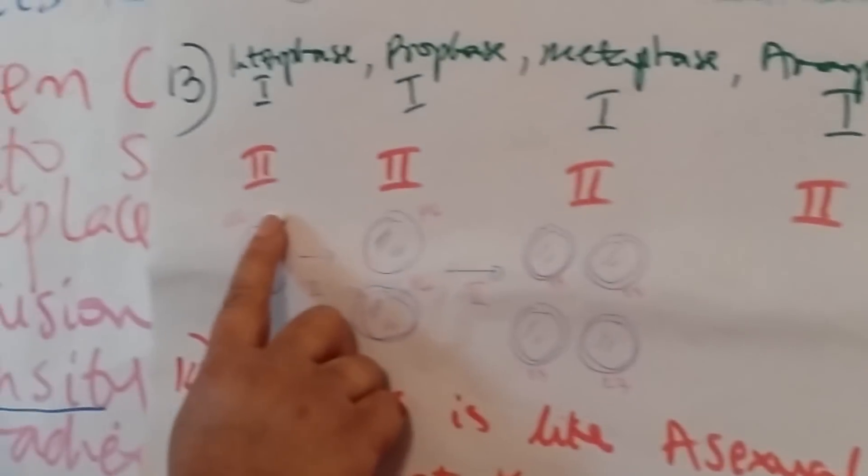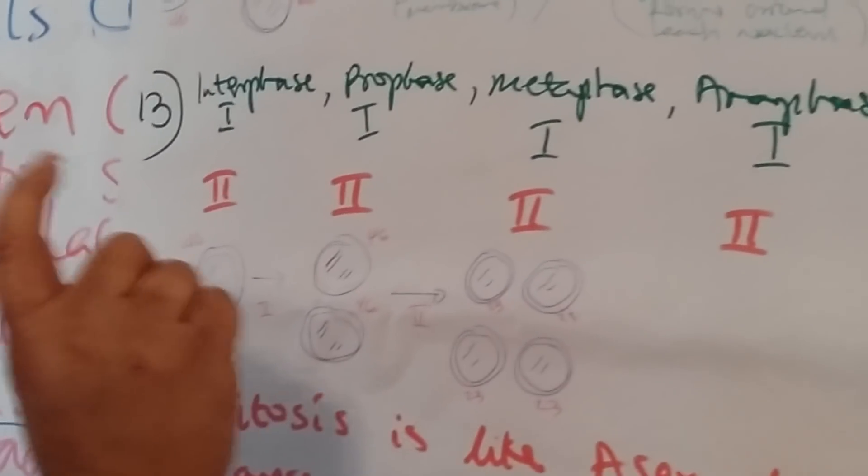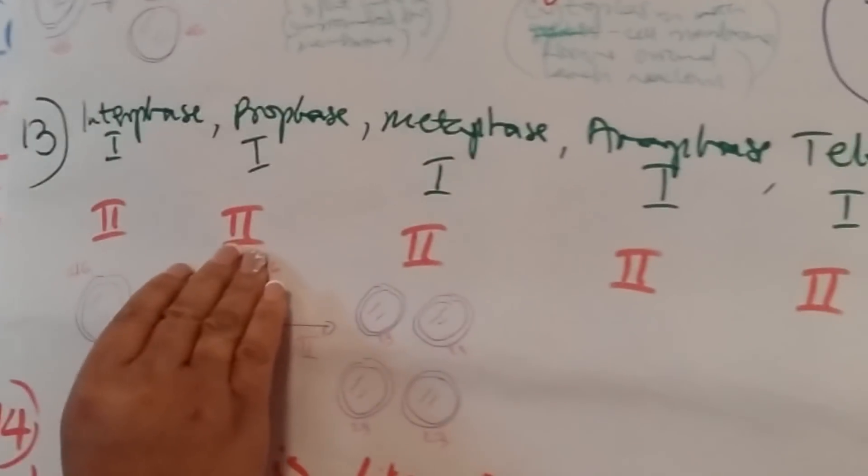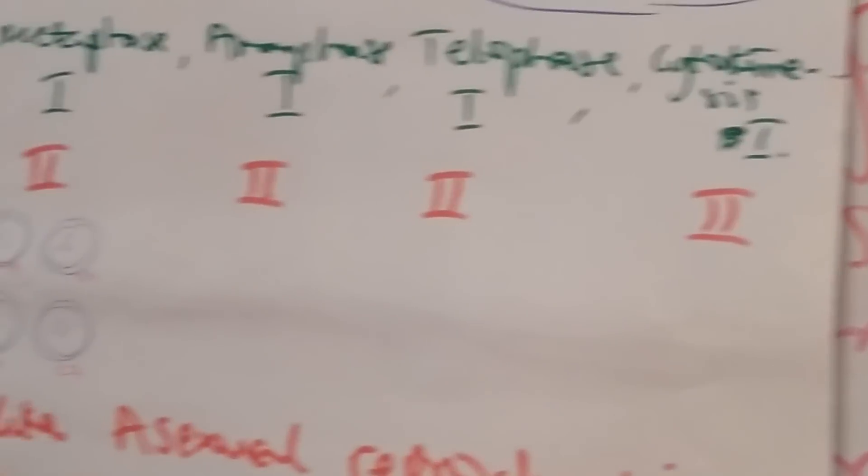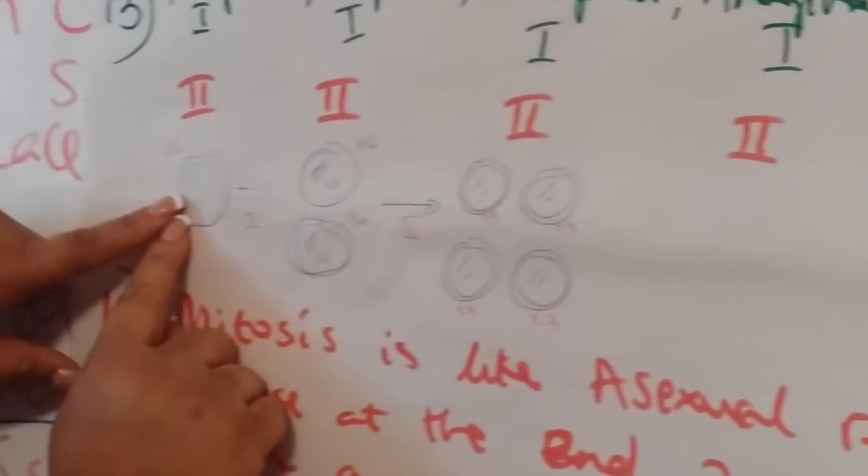The process repeats itself. There is interphase but it's really short and quick, then you have prophase 2, metaphase 2, anaphase 2, telophase 2, and cytokinesis 2.